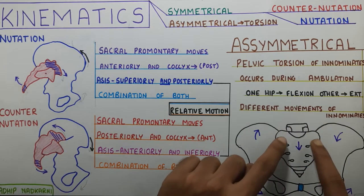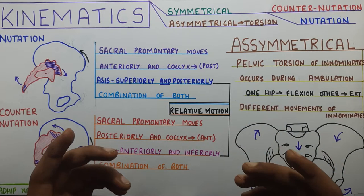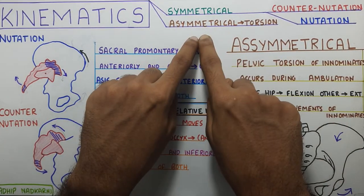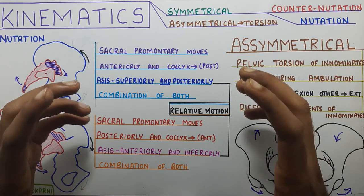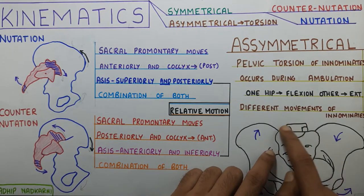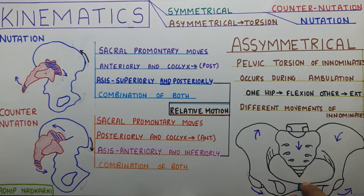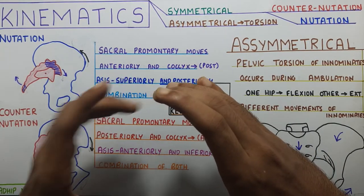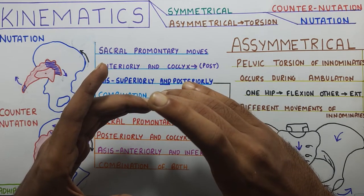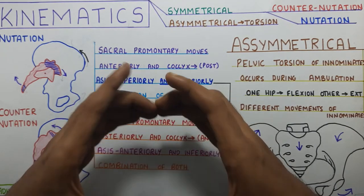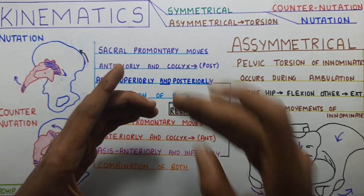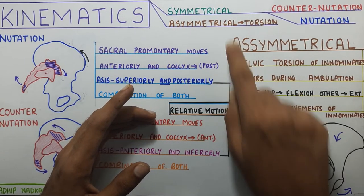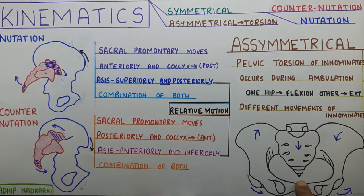Another important point is that this is a closed kinematic chain. In an open kinematic chain the distal part is free to move, but here both ends are connected together forming a closed chain. So when asymmetrical movement occurs, the movement happens at the SI joint as well as at the pubic symphysis — the second articulation here. Because it's a closed chain, asymmetrical movement always produces motion at both the SI joint and the pubic symphysis. Whereas with symmetrical movement like nutation and counter-nutation, the movement does not have to occur at the symphysis pubis — only sacral movement can happen while the symphysis remains stable.